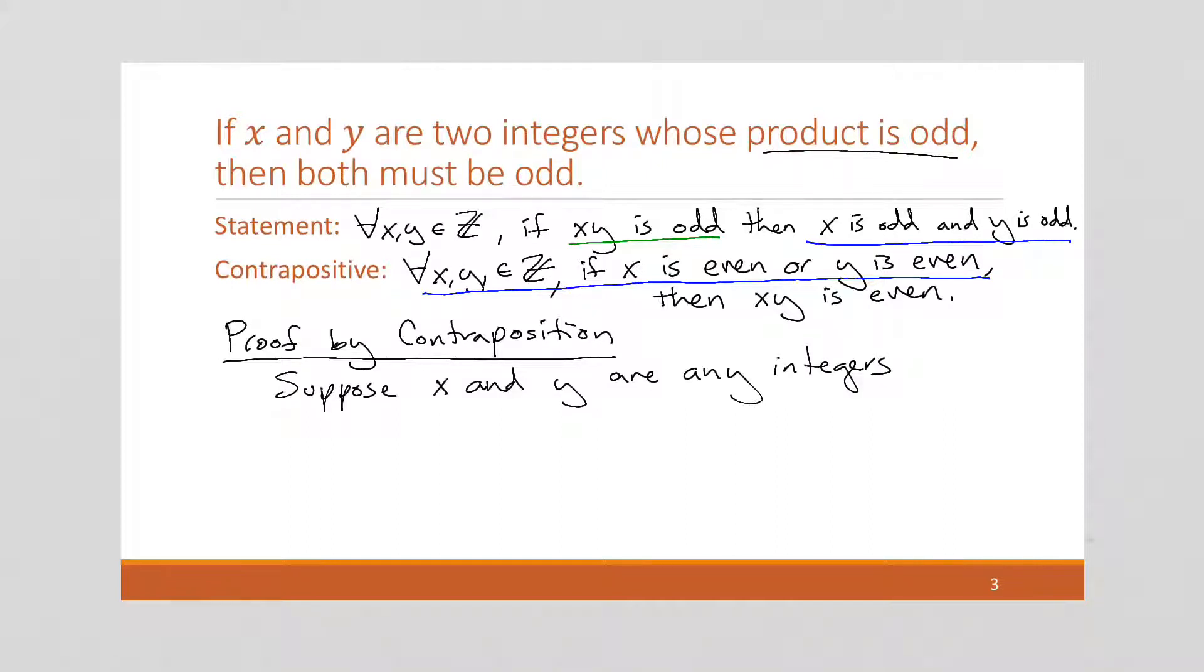Now, what's another way of saying that x is even or y is even? I can say such that x or y is even. Another way of saying this is that one of them must be even.